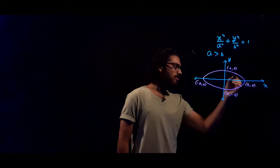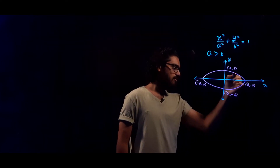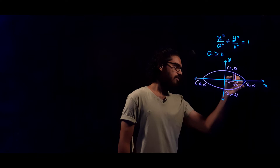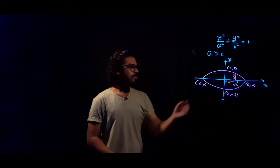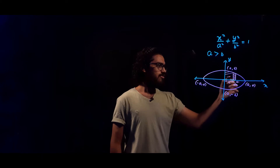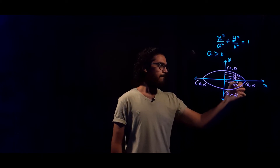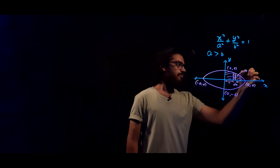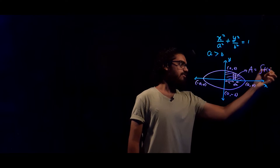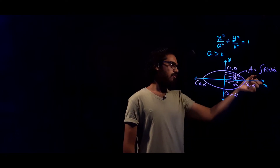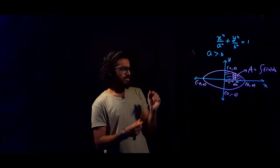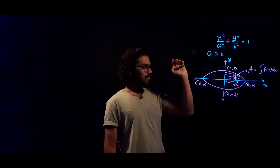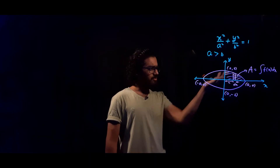Now I'll write the procedure for how we calculate using integration. This is x, this is dx, and this is the strip we are going to integrate. The area is enclosed between the curve and the x-axis, given by the integral of f(x) dx. We'll write y in terms of x.